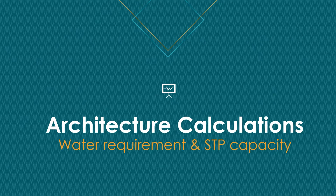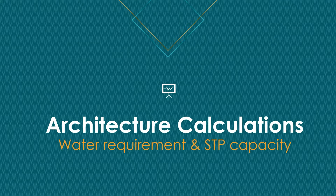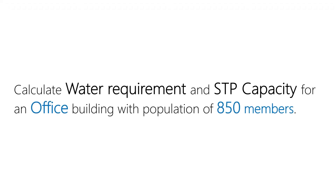In today's video we shall learn how to estimate the water required for a building per day and the estimation of capacity of sewage treatment plant to be provided in the site. For example, let's calculate the water requirement and the STP capacity for an office building that has a population of 850 users per day.